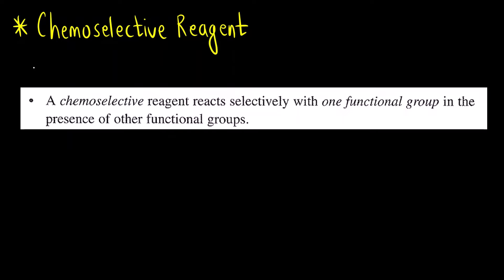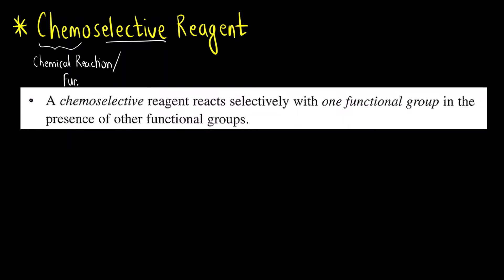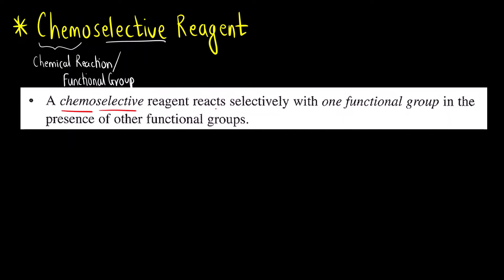Let us first understand what is the meaning of a chemoselective reagent. Chemo means chemical reaction. A reagent that is selective towards one particular chemical reaction, or we can say one particular functional group — a reagent that reacts with one particular functional group in the presence of other functional groups.